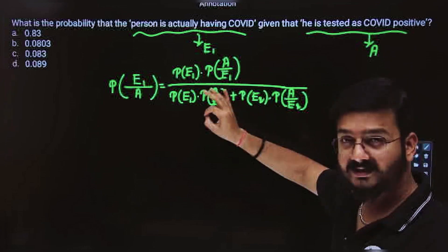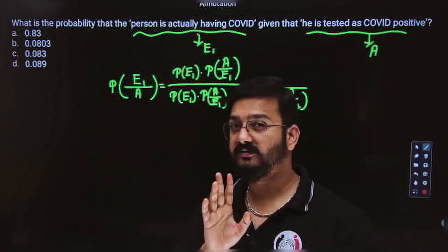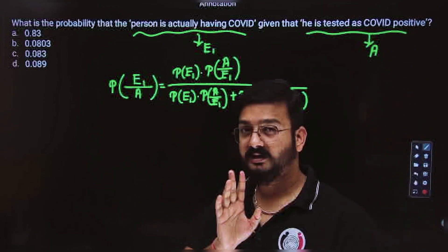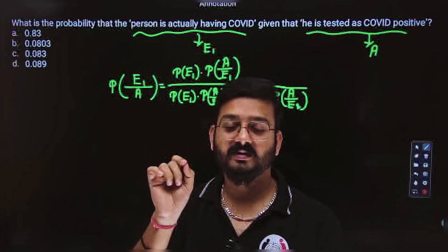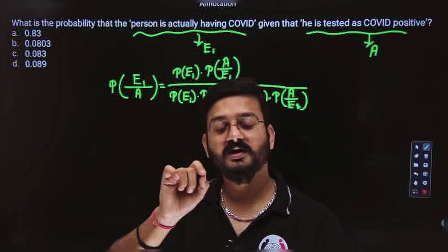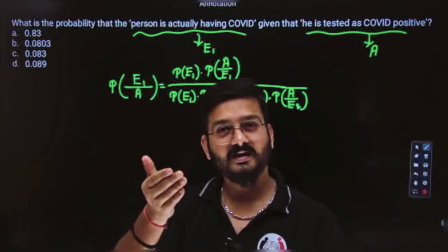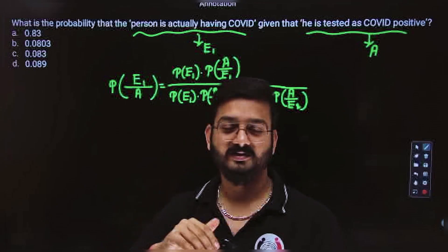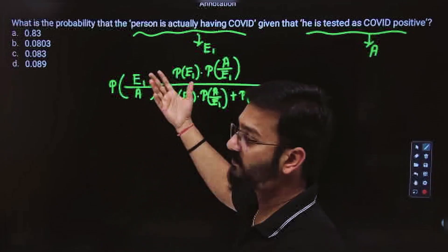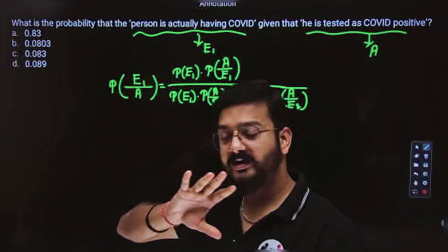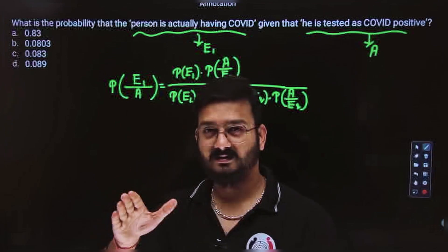Make sure that in the comment box you write down the answer — you already have all the values. When you write a percentage, don't write only the decimal part. Suppose it is 0.1 percent — the probability is 0.1 by 100. You have to substitute it correctly. 0.1 is not the value; the value is 0.1 percent divided by 100.